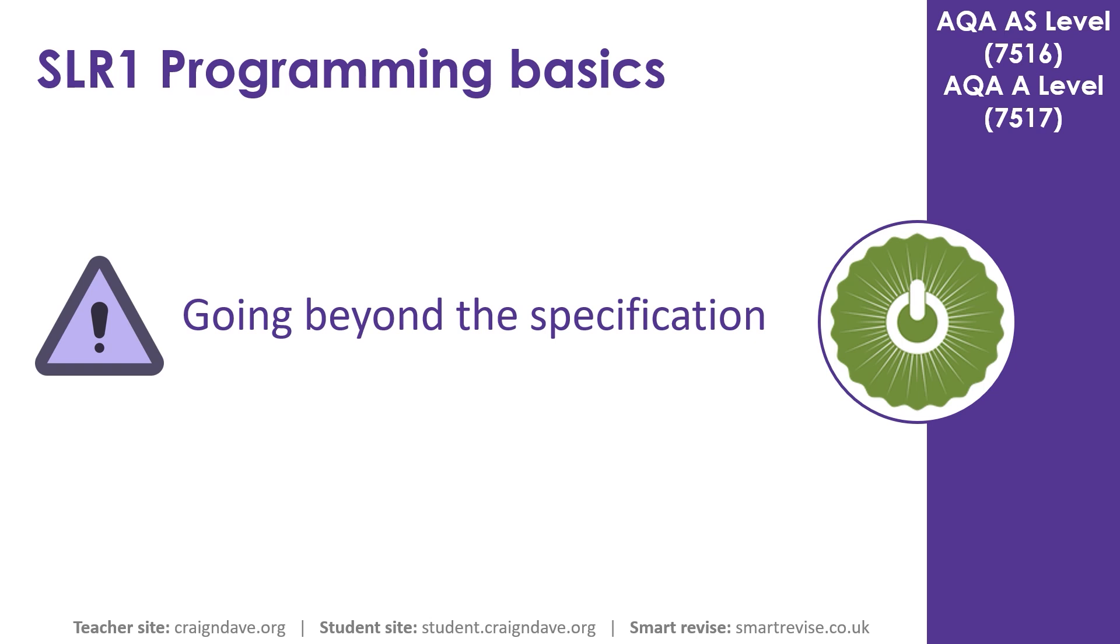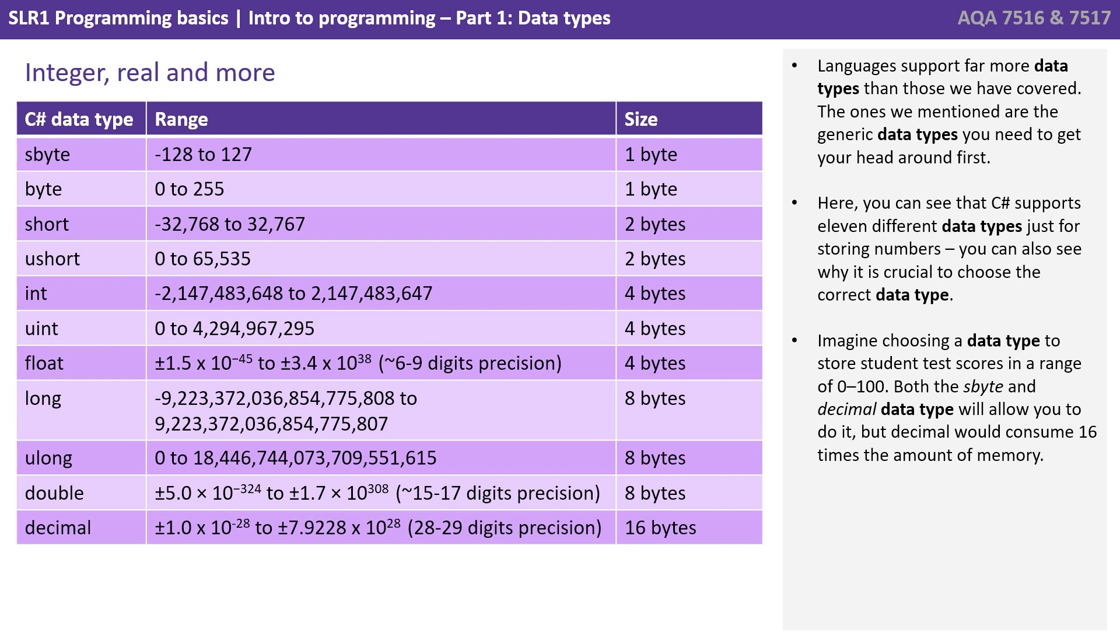If you want to stick around just for another 30 seconds we're going to go slightly beyond the A-level spec. So languages support far more data types than those that we have covered. The ones we mentioned are the generic data types that you need to get your head around first. Here for example we can see that C sharp supports 11 different data types just for storing numbers. And you can also see why it's crucial to choose the correct data type. Imagine choosing a data type to store a student test score in a range of 0 to 100. Both the s-byte and the decimal data type will allow you to do it. But the decimal data type would consume 16 times the amount of memory.